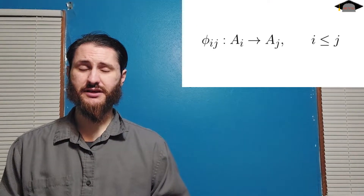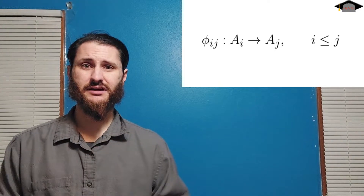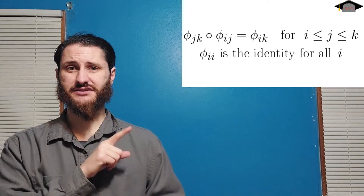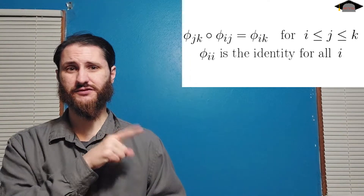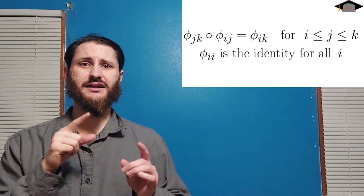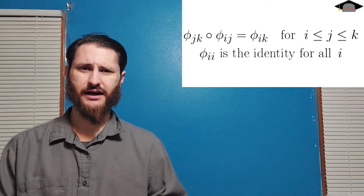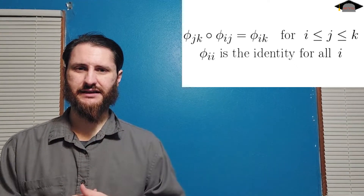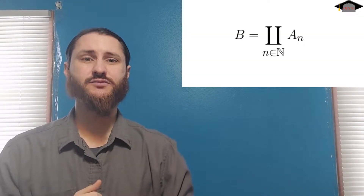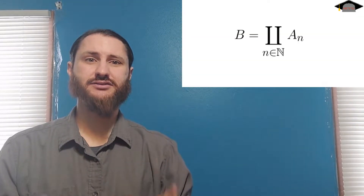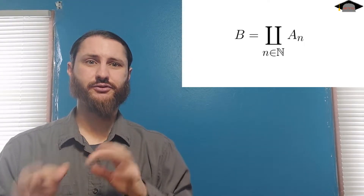We also want to have a whole bunch of homomorphisms between them. We're going to denote them by b, and we're going to want them to satisfy the following properties listed here. This first bullet point pretty much just says that composition of these homomorphisms is going to work out nicely, work out how you might expect them to. And the second line is obvious. The next thing we want to do is set up this group b, defined as the disjoint union of all of the different groups A sub n.